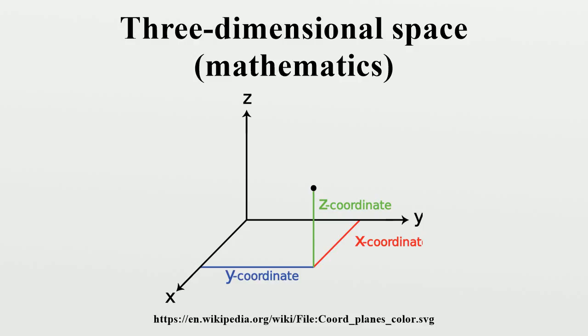In geometry, coordinate systems in mathematics, analytic geometry describes every point in three-dimensional space by means of three coordinates. Three coordinate axes are given, each perpendicular to the other two at the origin, the point at which they cross. They are usually labeled x, y, and z.